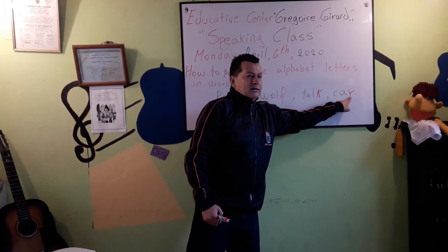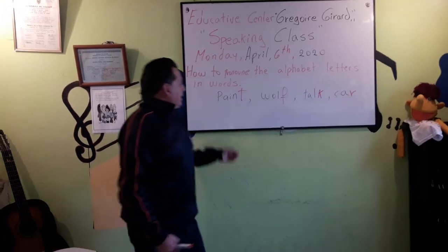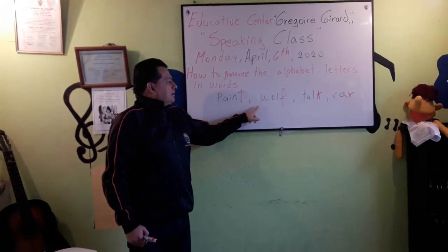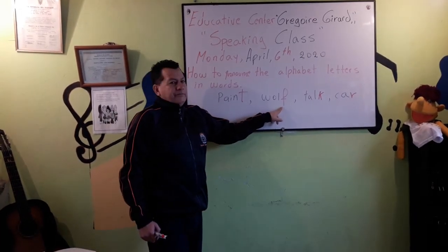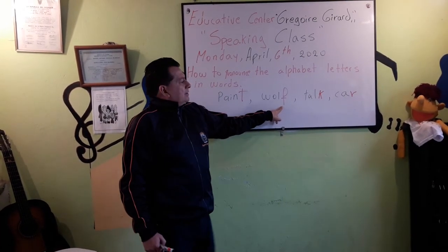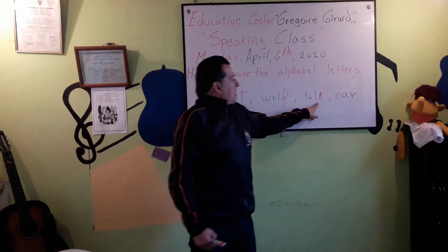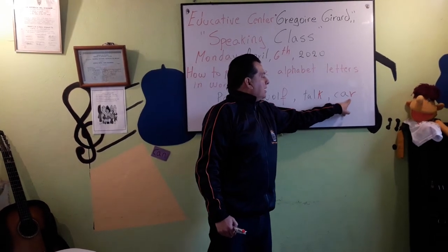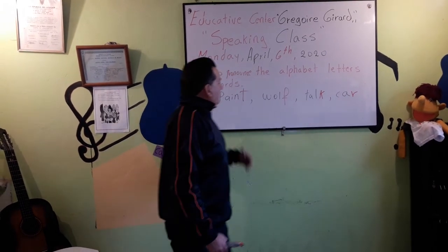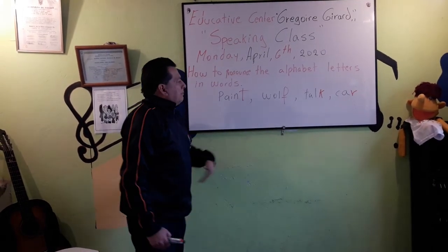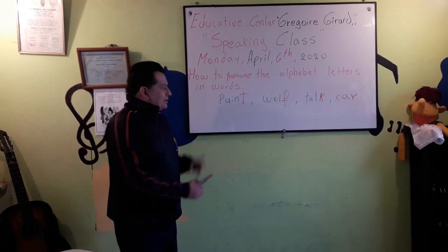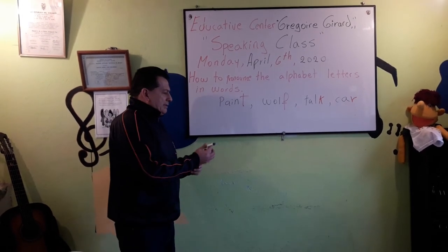In the alphabet the R sounds like "R." Car. So: paint, wolf, talk, car. And we can write more examples and more examples.